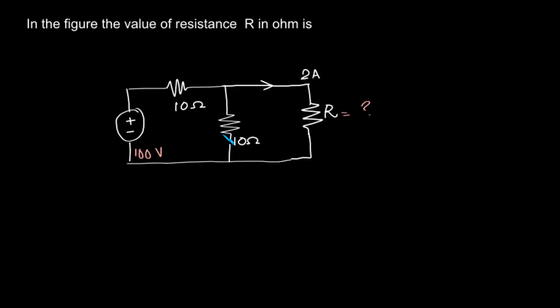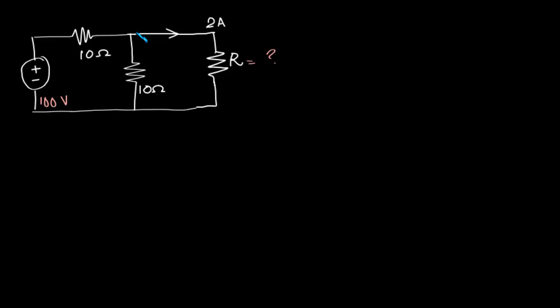Let's say that voltage is VA. What is VA? We can write Kirchhoff's Current Law. The current going in this direction will be (VA minus 100) divided by 10 ohms.